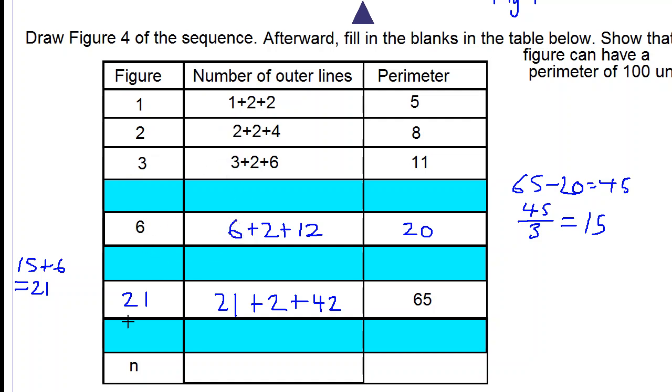figure twenty-one we began with twenty-one, figure n we began with n, the second number is always two, the third number is the number of the figure multiplied by two, so n times two is two n.